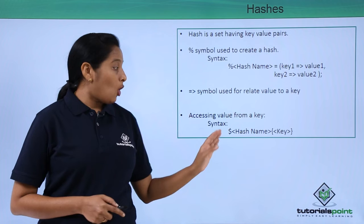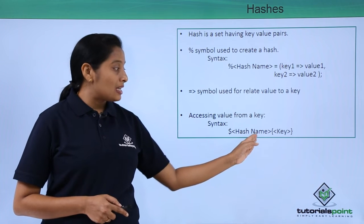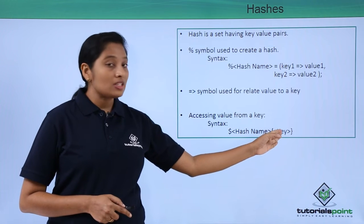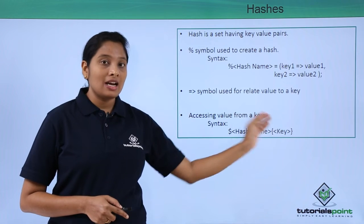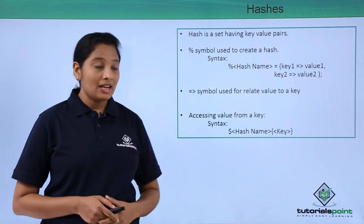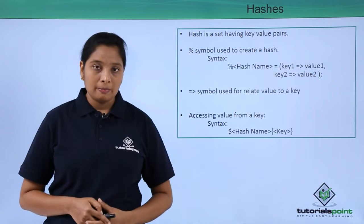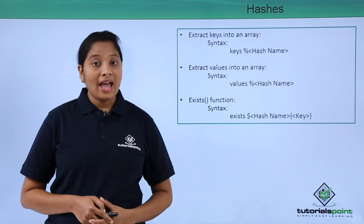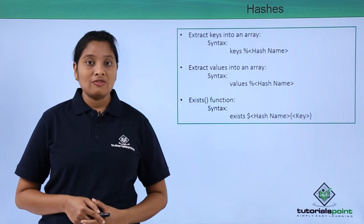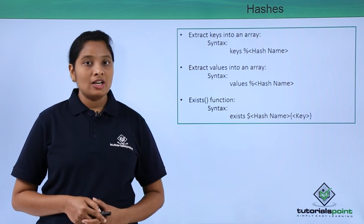To access a value from a key, use the dollar symbol followed by the hash name and close the key name in curly braces. As the value is nothing but a scalar, we have to use a dollar symbol.